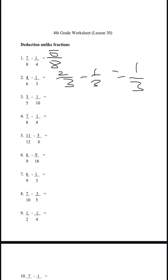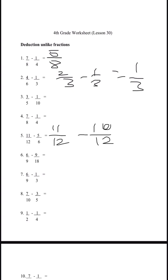Number five is 11 over 12 minus 5 over 6. Multiply the top and bottom, and we get 11 over 12 minus 10 over 12, which gives us 1 over 12.